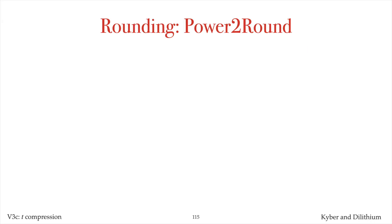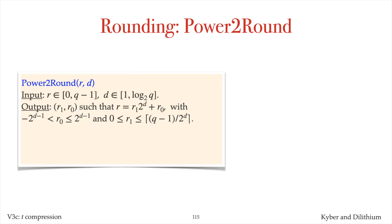The coefficients of the polynomials in the public key component T are rounded using Power to Round, which is similar to, but not quite the same as, the modified decompose routine presented later in this video. Power to Round takes as input an integer r between zero and q minus one, and the positive integer d that is less than the bit length of q. So d is less than 23, since Dilithium uses a 23-bit prime q. The output of Power to Round is a pair of integers r1, r0, such that r equals r1 times 2 to the d plus r0.